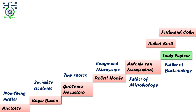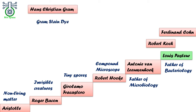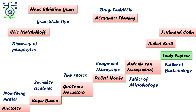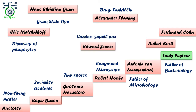Apart from these, there were more scientists who contributed equally — Hans Christian Gram for the Gram staining dye, Alexander Fleming for giving the drug penicillin, Élie Metchnikoff for the discovery of phagocytosis, and Edward Jenner for giving the vaccination against smallpox.